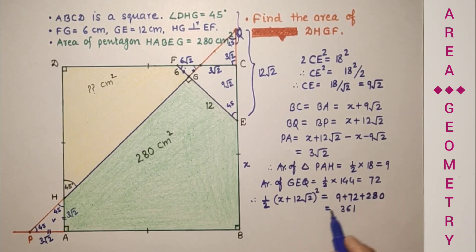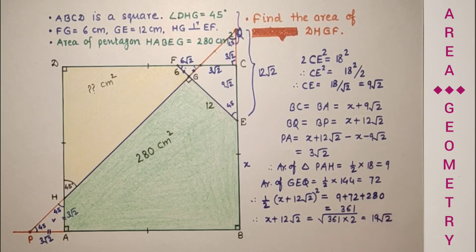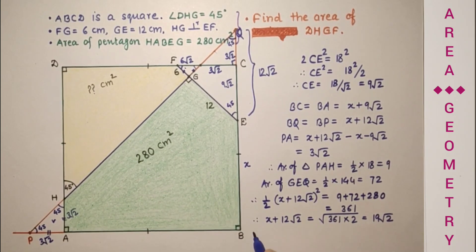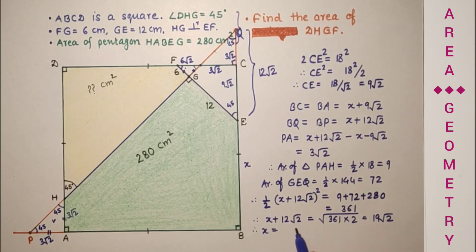This is square, so therefore X plus 12 root 2 is equal to square root of 361 into 2, which is 19 root 2. Therefore X is equal to 19 root 2 minus 12 root 2, which is 7 root 2.